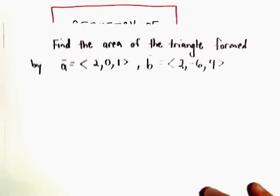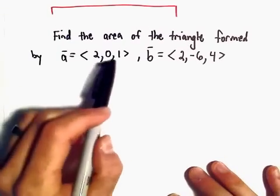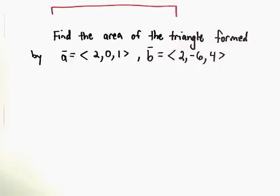Alright, here we're going to find the area of a triangle formed by a couple vectors. So vector A has components 2, 0, 1. Vector B has components 2, negative 6, 4.